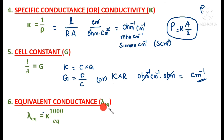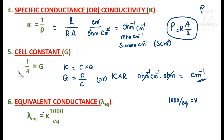Next is equivalent conductance, lambda equivalent (λ_eq). It is the conductance of all the ions furnished by 1 gram equivalent of an electrolyte. The volume containing 1 gram equivalent of electrolyte is 1000 / equivalent. Therefore, equivalent conductance = κ × (1000 / equivalent).